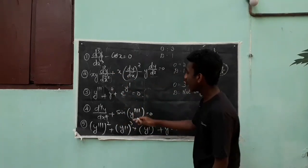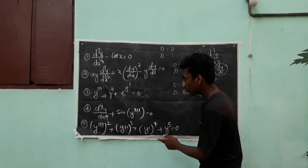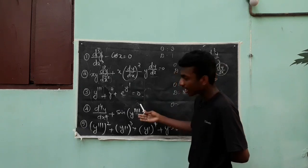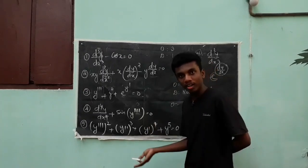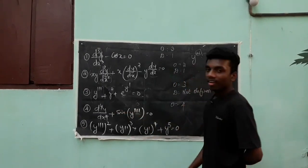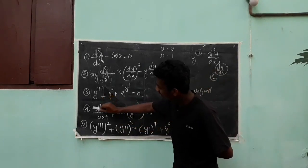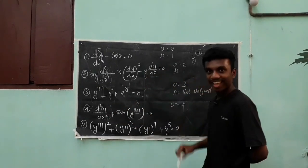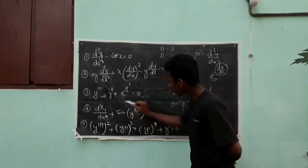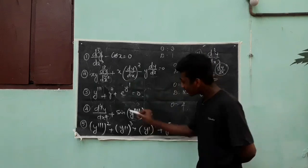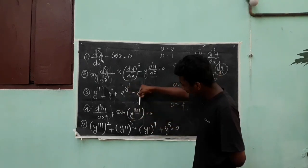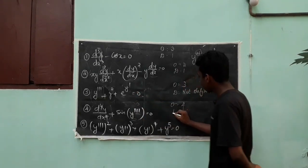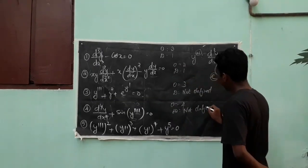Consider d⁴y/dx⁴ + sin(y''') = 0. Here the derivative terms have orders 4 and 3. The highest order is 4, so the order is 4. For the degree: sin(y''') contains a derivative inside a trigonometric function, which means the degree of that term is not defined. Therefore the overall degree is not defined.